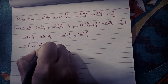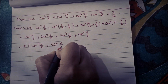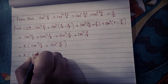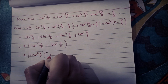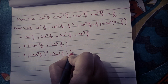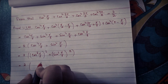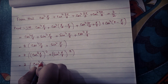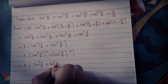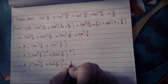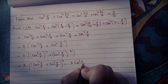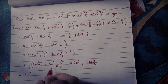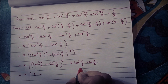This becomes 2 times (cos to the power 4 of π/8 plus sin to the power 4 of π/8), which I will write as 2 times (cos squared π/8 whole squared plus sin squared π/8 whole squared). I will apply the formula a squared plus b squared equals (a plus b) whole squared minus 2ab. So this is 2 times [(cos squared π/8 plus sin squared π/8) whole squared minus 2 times cos squared π/8 times sin squared π/8]. Since cos² + sin² = 1, this equals 2 times (1 minus 2 cos squared π/8 sin squared π/8).